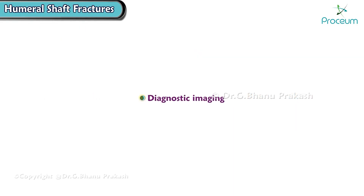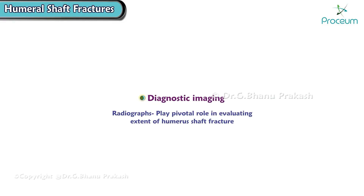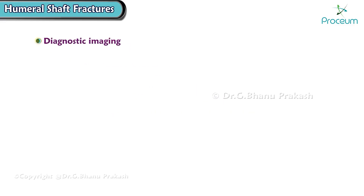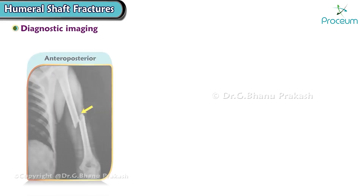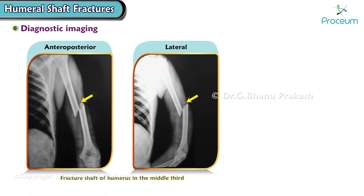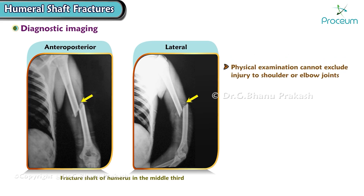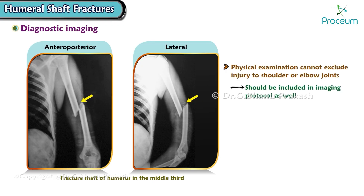Radiographs play a pivotal role in evaluating the extent of a humerus shaft fracture. Imaging should include anteroposterior and lateral views of the humerus to adequately assess the fracture. If the physical examination cannot exclude injury to the shoulder or elbow joints, these should be included in the imaging protocol as well.